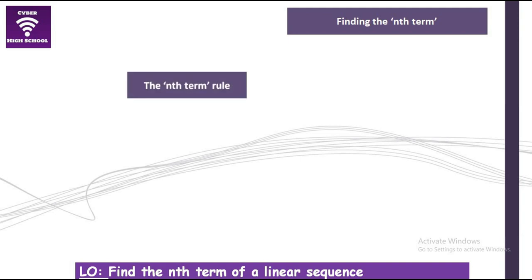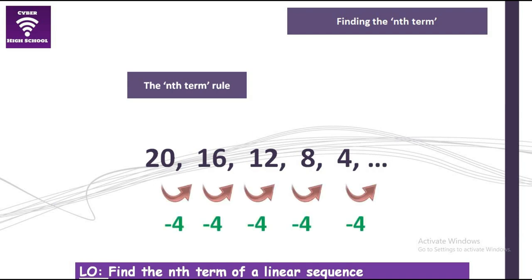All right, let's have a look at a situation like this. This one, the common difference is subtracting 4. Remember in the previous one we were adding 3, but in this one we are going to be subtracting 4. So the term-to-term rule is subtract 4. How do we then calculate the nth term of this sequence?